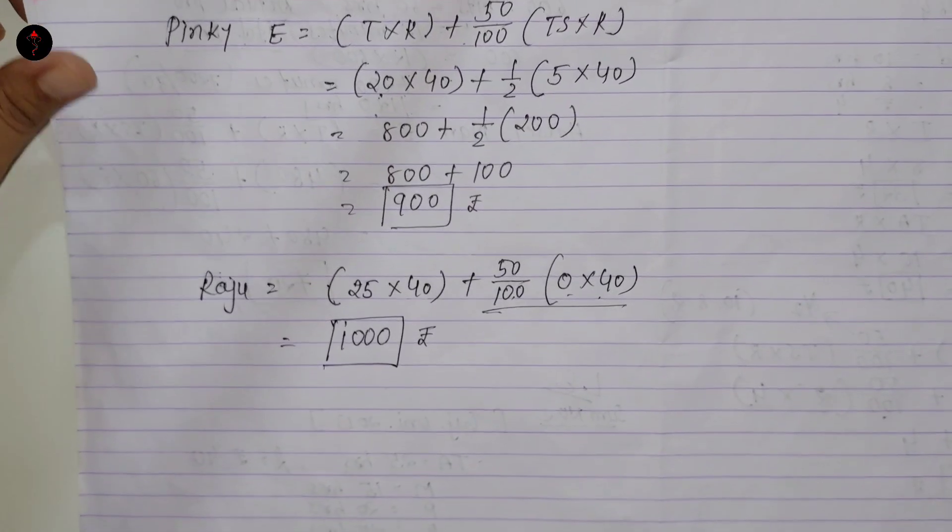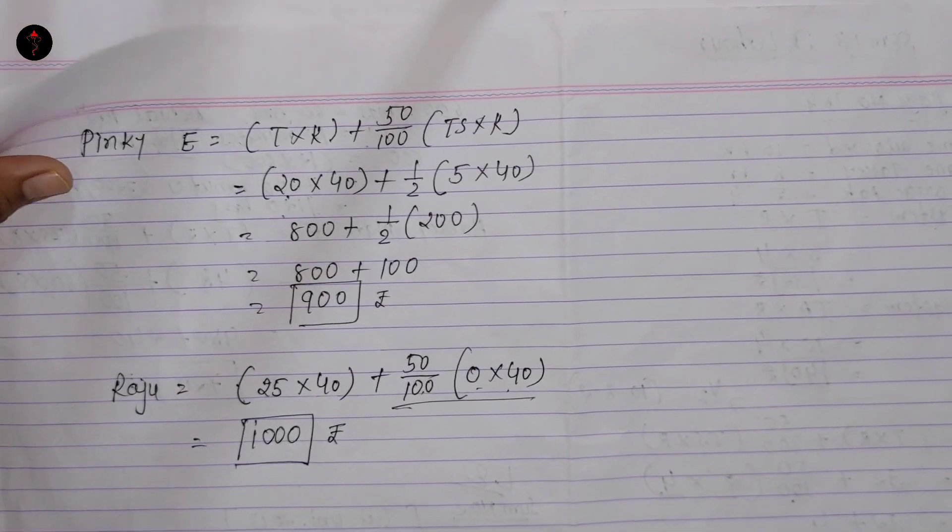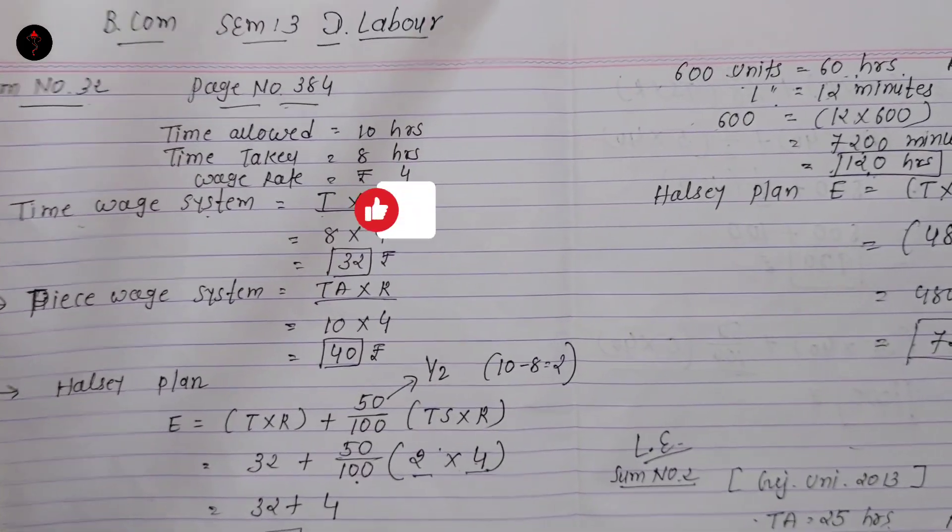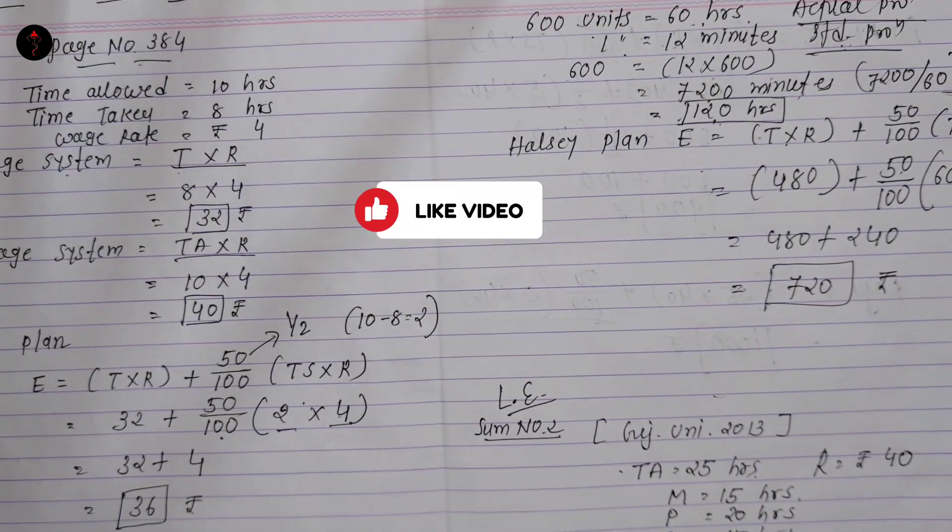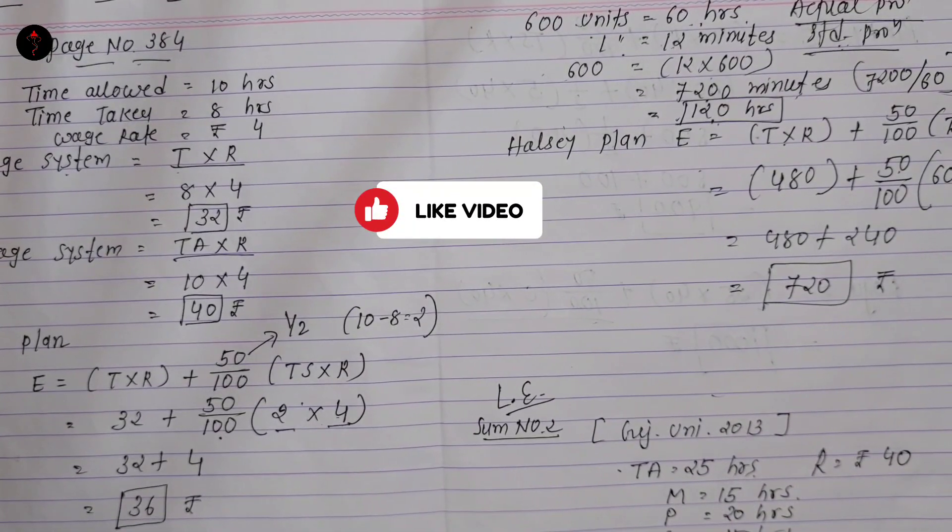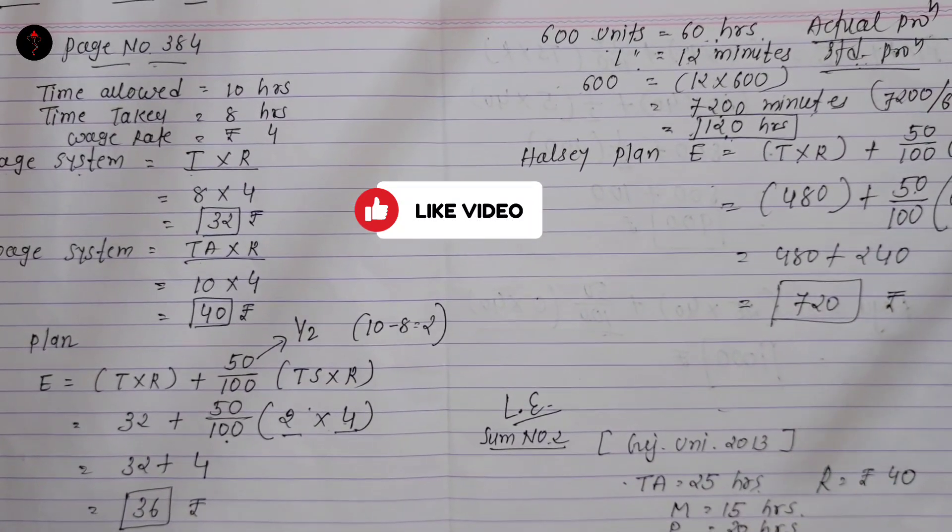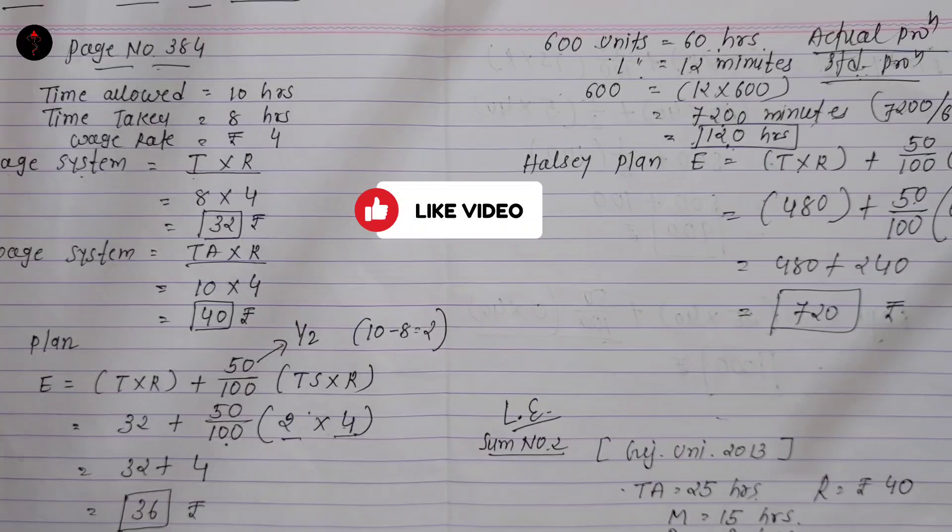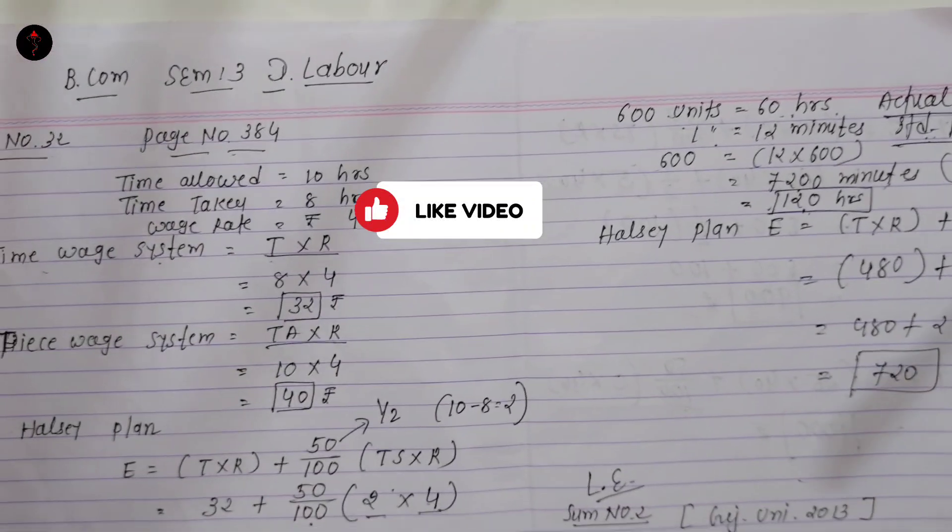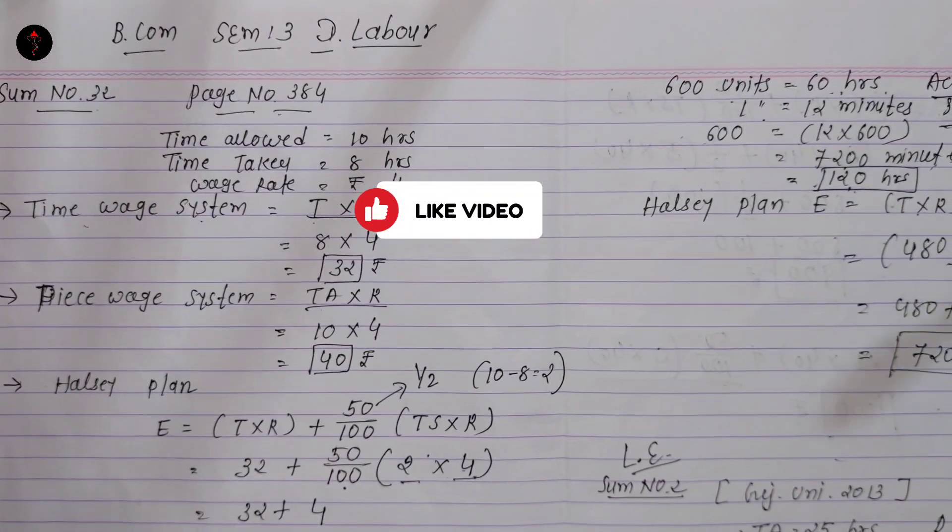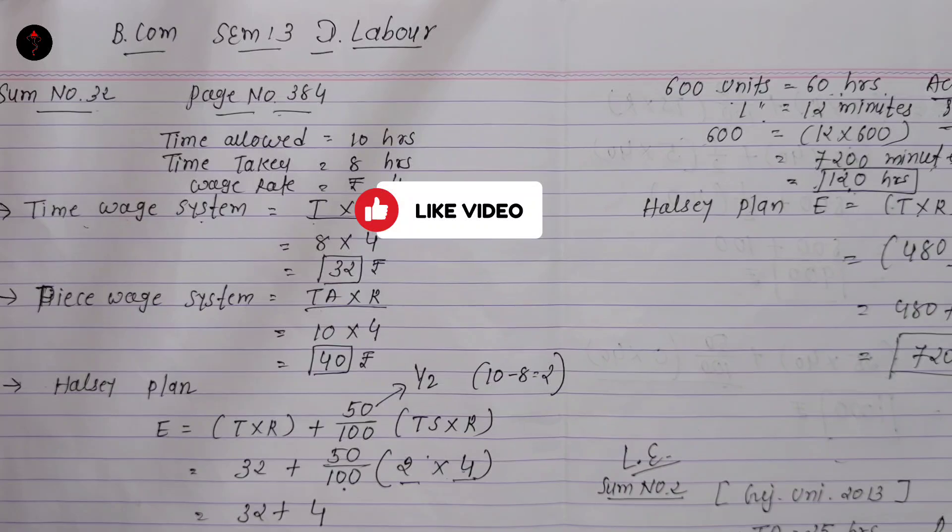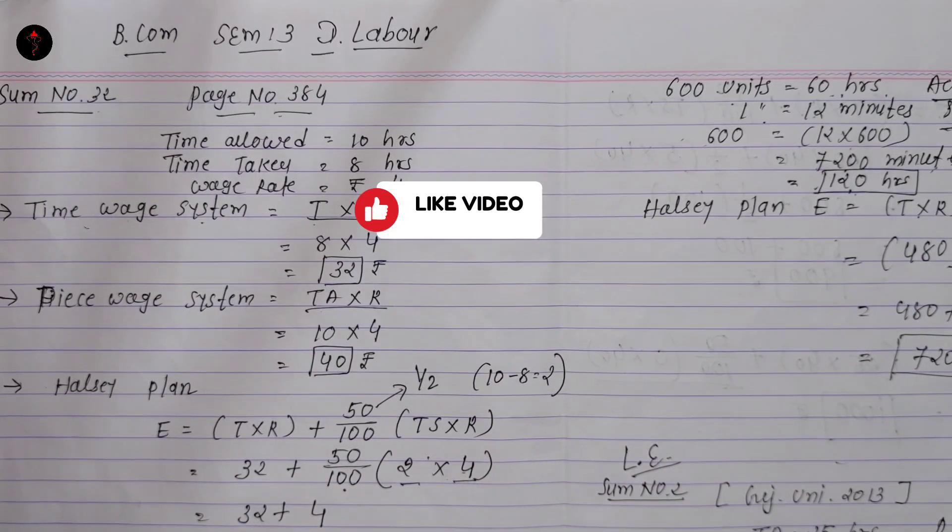These are all sums covering time wage and piece wage as well as Halsey and Rowan Plans. These are very important sums asked in universities. These types of sums are asked in exams and are very important, so you should practice them. See you in the next video with labor turnover rate, whose formula and explanation is remaining. In the next video after the explanation, I will do the main sums of labor turnover. Okay students, see you in the next video. Bye.